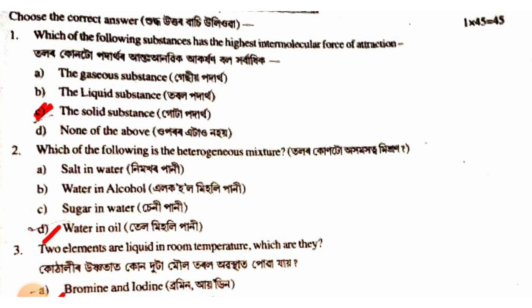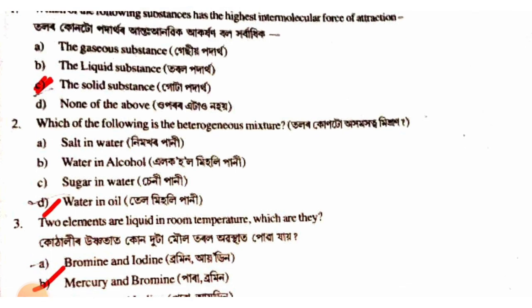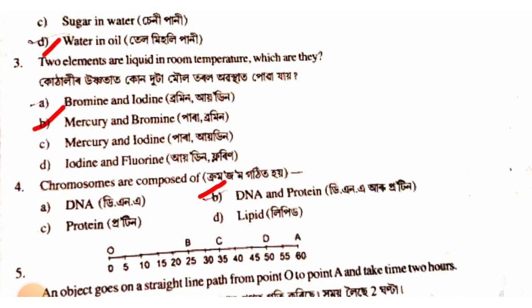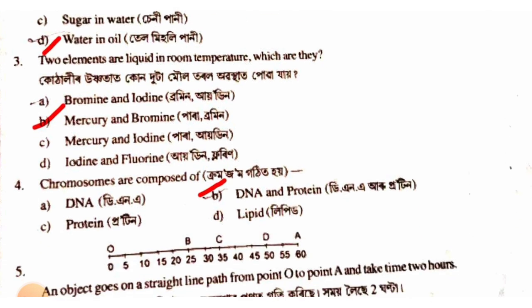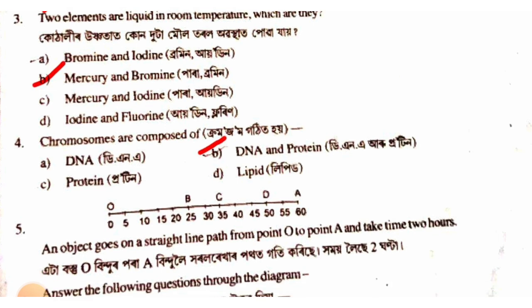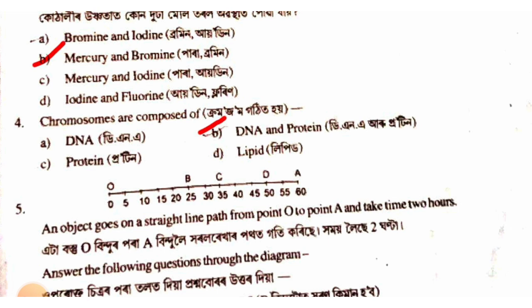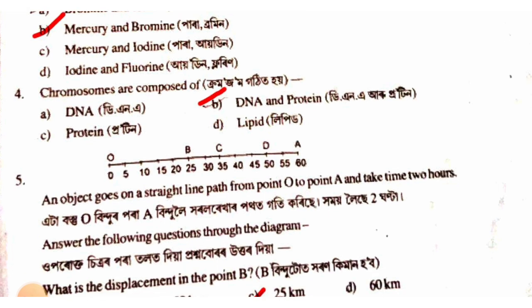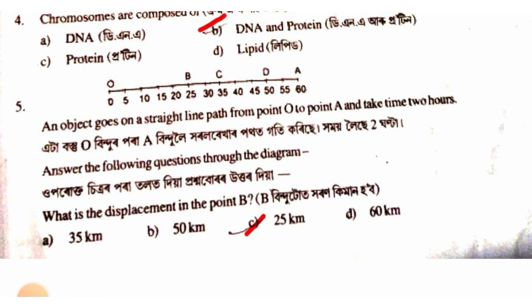The answer is option D — water in oil. Which two elements are liquid at room temperature? The answer is option B — mercury and bromine. Chromosomes are composed of option B — DNA and protein.